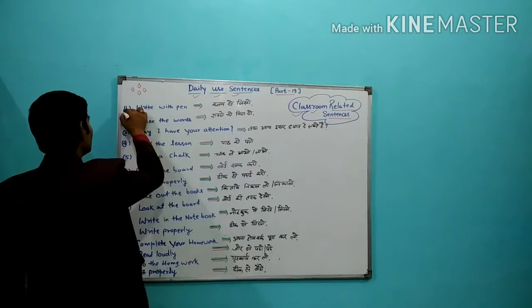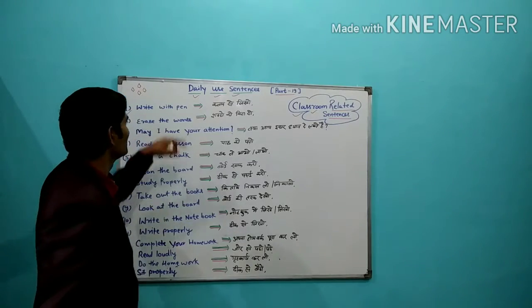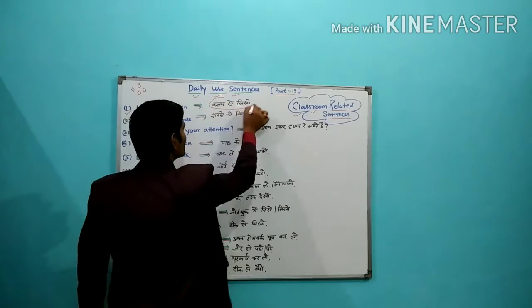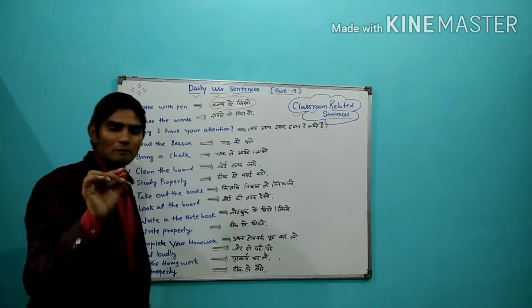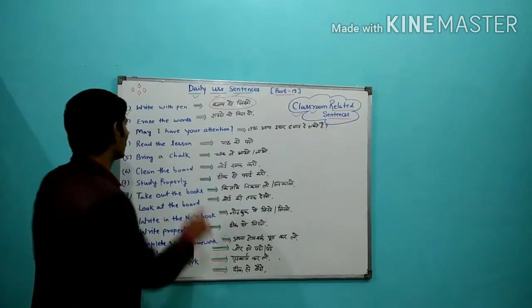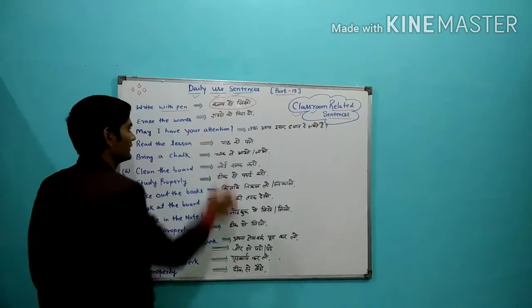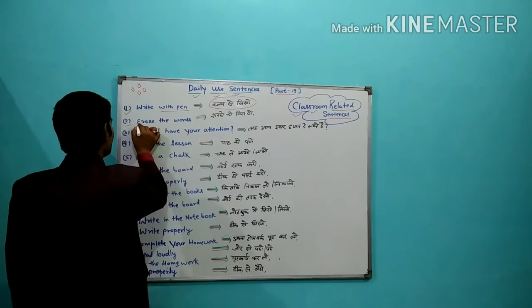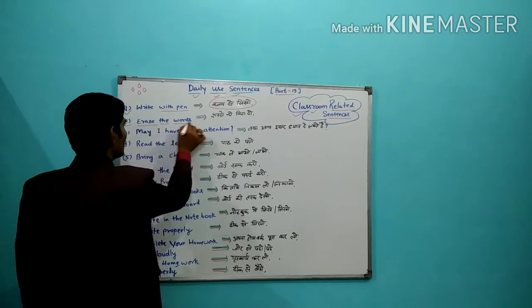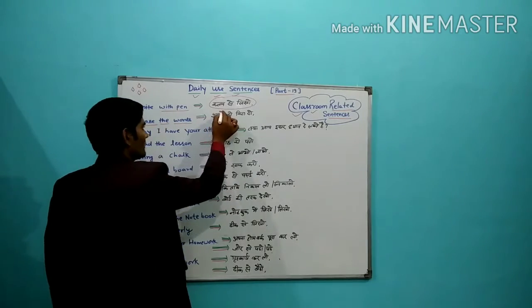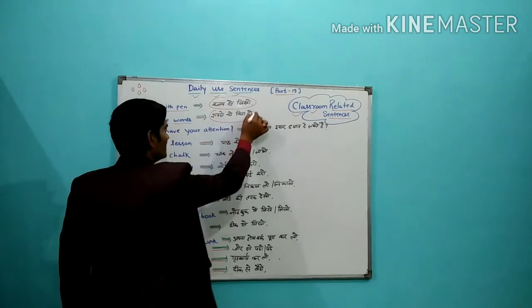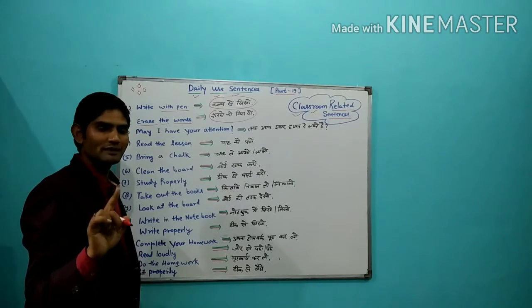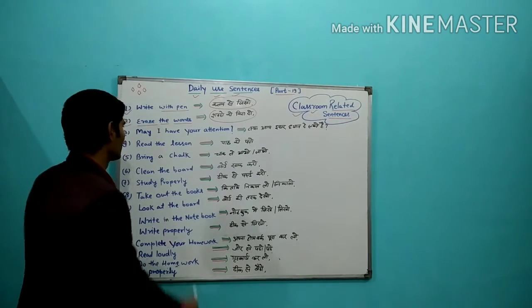पहला sentence है यहां पर: Write with pen. इसका मतलब है, pen से लिखो। Next sentence: Erase the words. इसका मतलब है, शब्दों को मिटा दो।